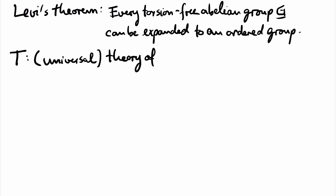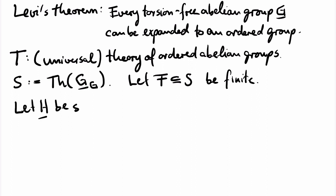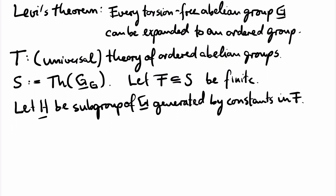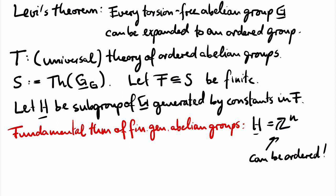Let T be the first-order theory of ordered abelian groups, and let S be the theory of the expansion of G by constants for each element of G. We claim that for every finite subset F of S, the union of F and T is satisfiable. Only finitely many constant symbols appear in F. Let H be the subgroup of G generated by these constants; then H is a finitely generated abelian group. By the fundamental theorem for finitely generated abelian groups, if H is torsion-free it must be of the form Z^N, and Z^N can be linearly ordered — for example by the lexicographic order. This shows the union of F and T is satisfiable.